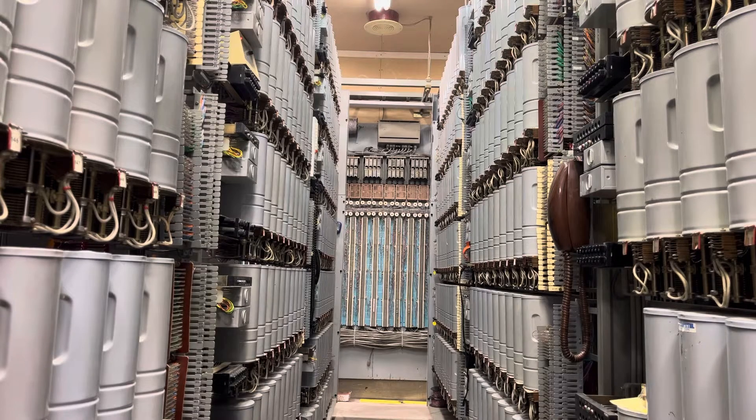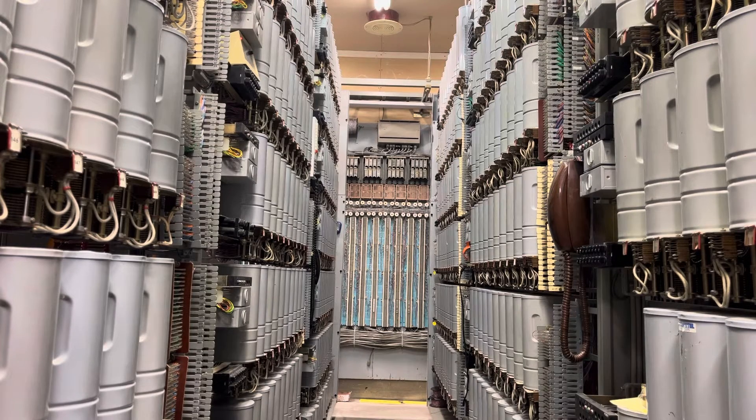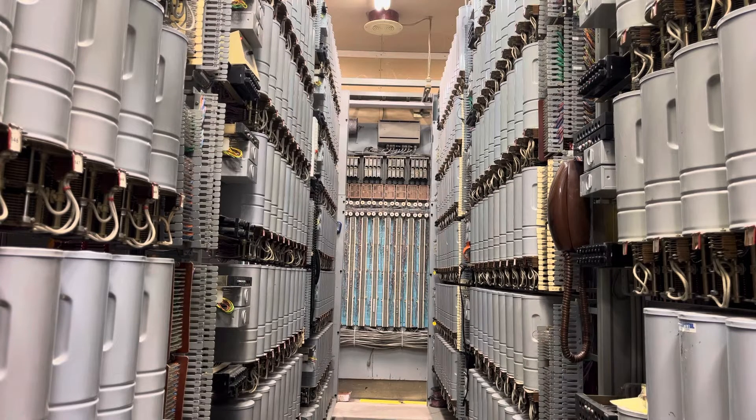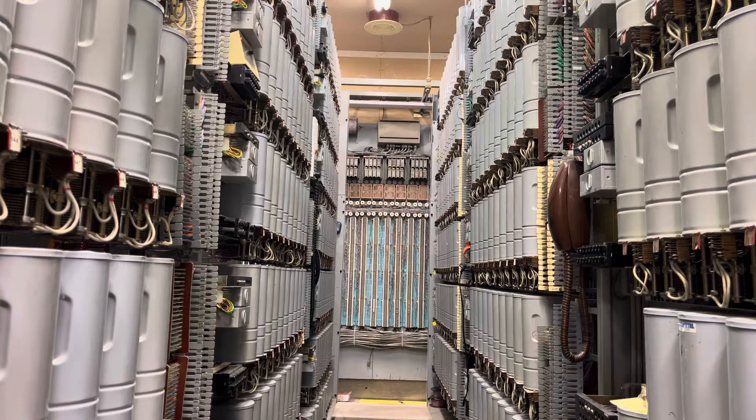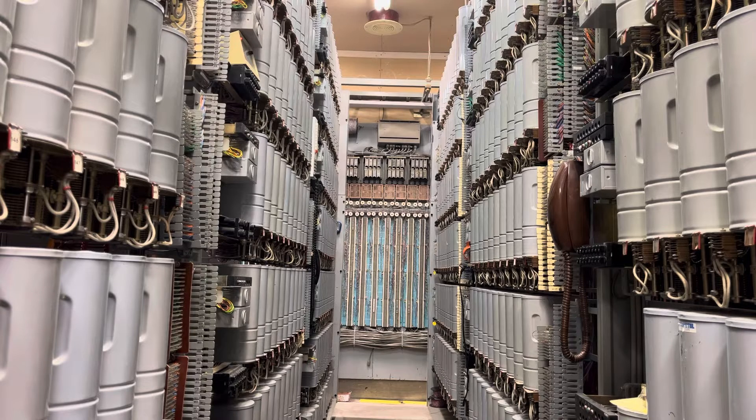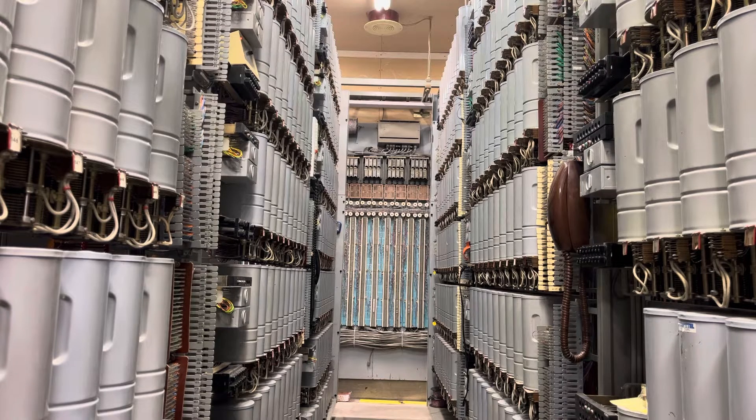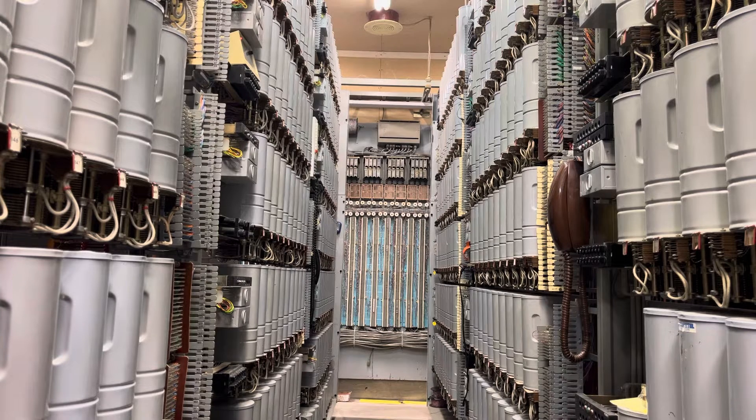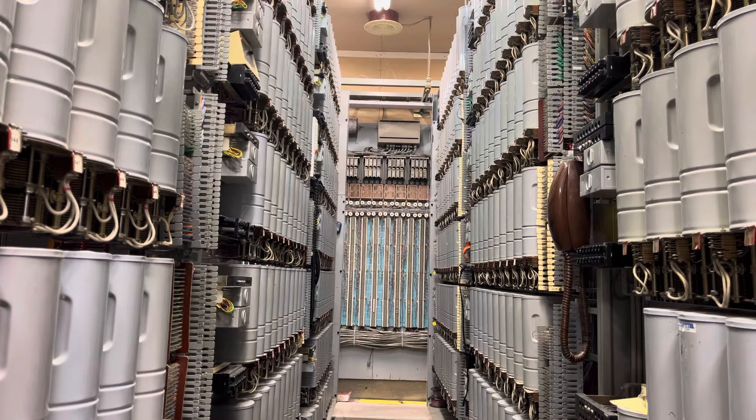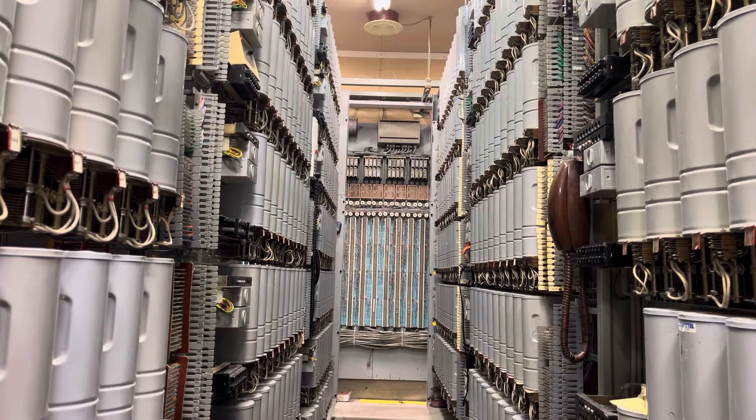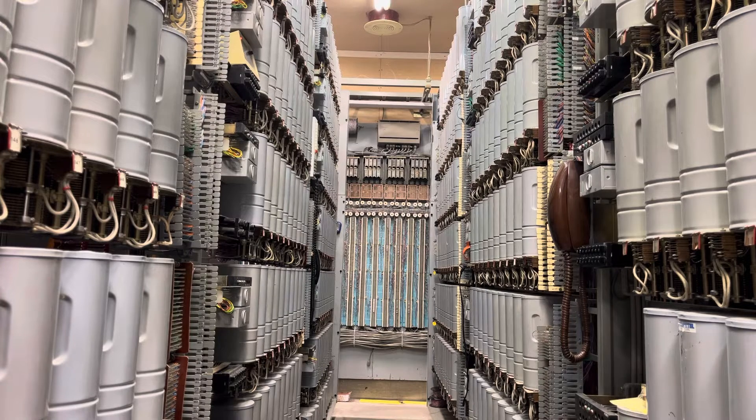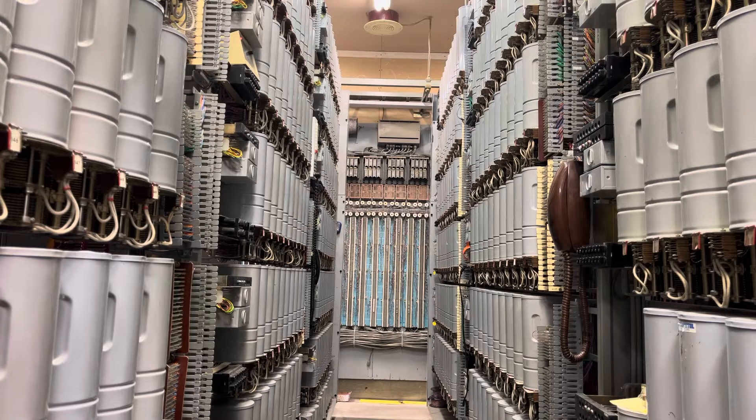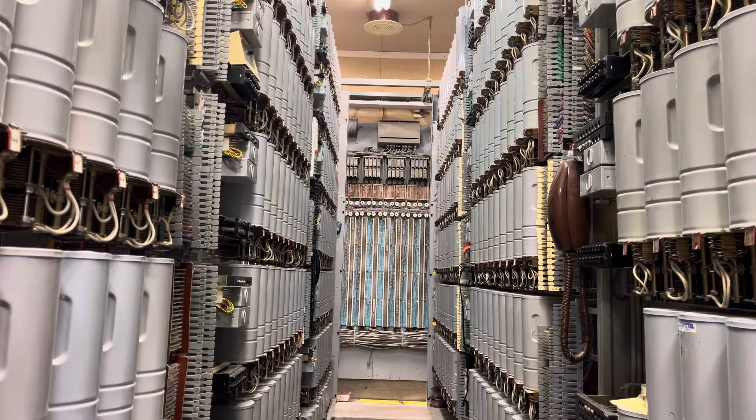Today's presentation will be how dead number intercept, aka disconnected telephone number, was done in a Western Electric 355 type step-by-step office. The same procedure was also done in a number one step. Depending on the time period that the step-by-step was in service, they could have done it two ways.